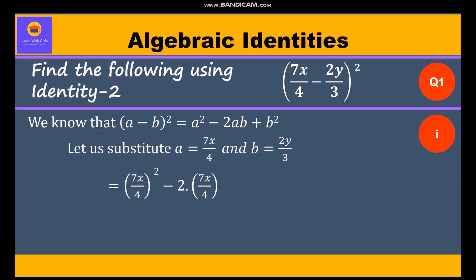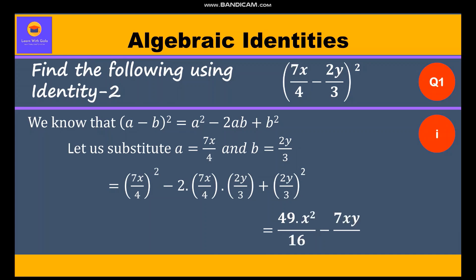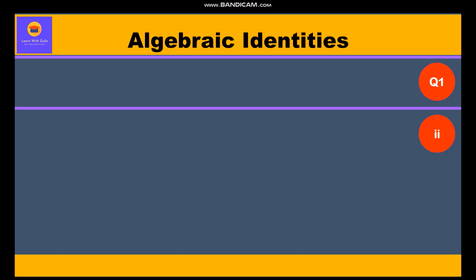We shall get (7x/4) squared minus 2 times (7x/4) times (2y/3) plus (2y/3) squared, which is equal to 49x²/16 minus 7xy/3 plus 4y²/9.